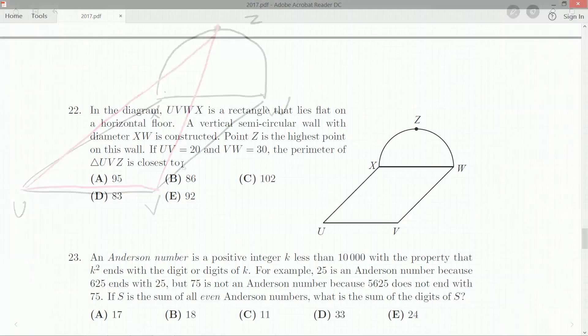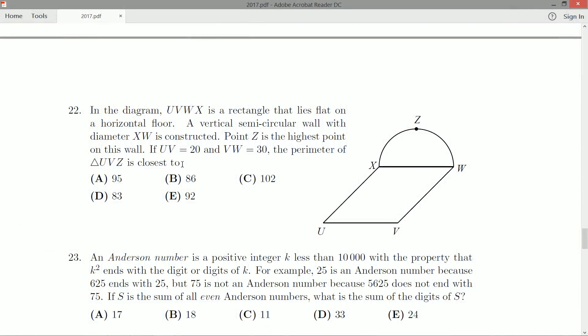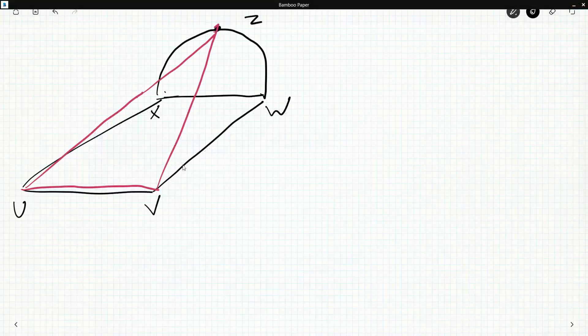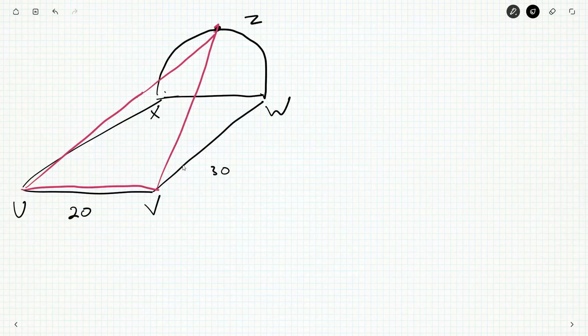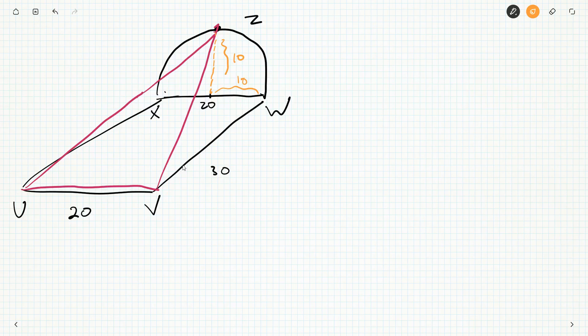So, we know some lengths as well. We already know UV is 20 and VW is 30. So, this is 20. This is 30. But, because it's a rectangle, WX is also 20. And as I said, Z being the highest point means that it rises right above the halfway here. So, our radius here is going to be 10, and that also happens to be the height Z is above the flat floor that the rectangle is placed on.